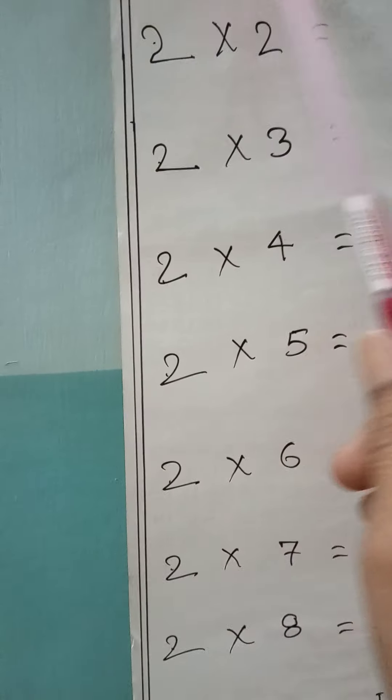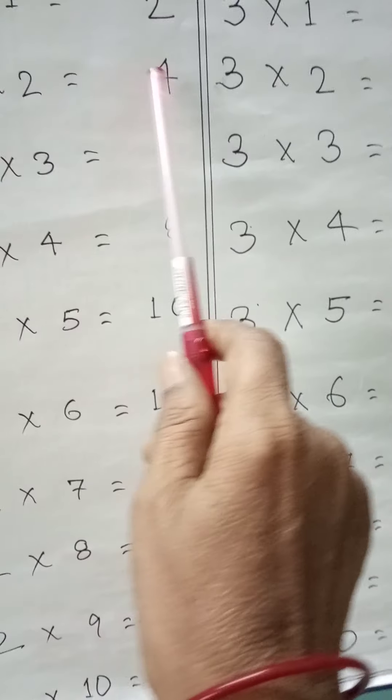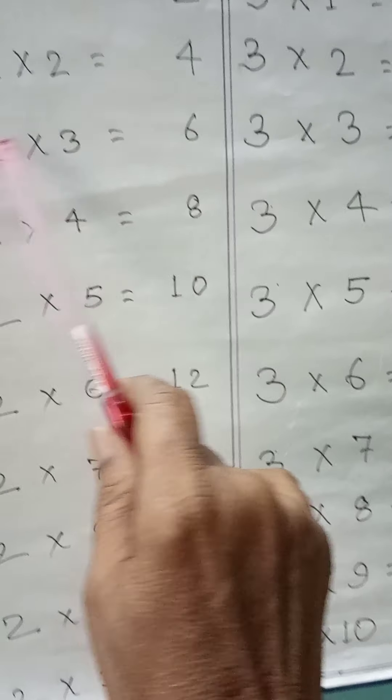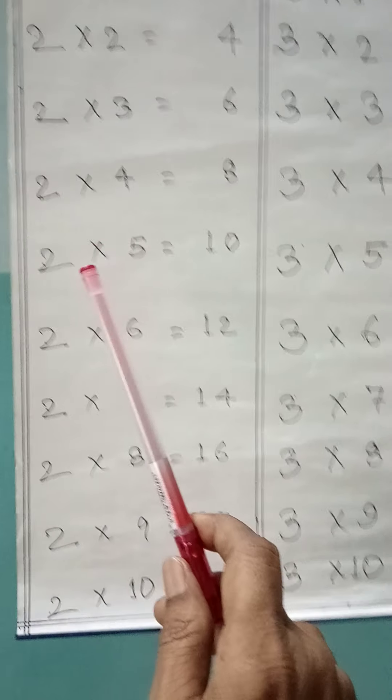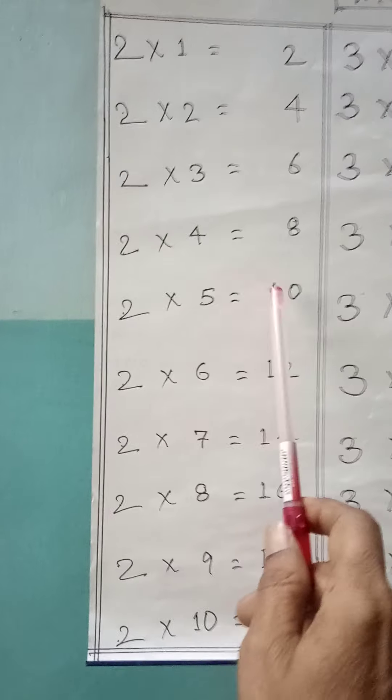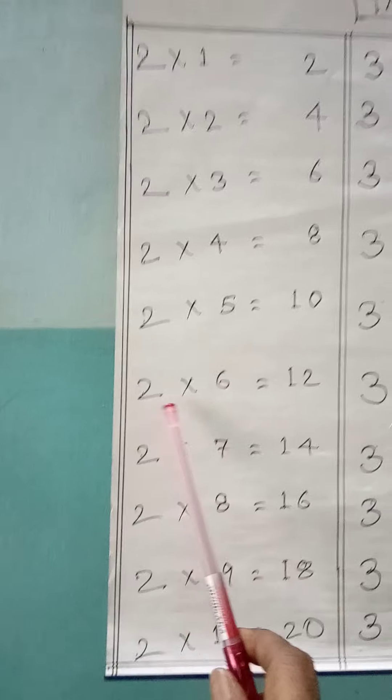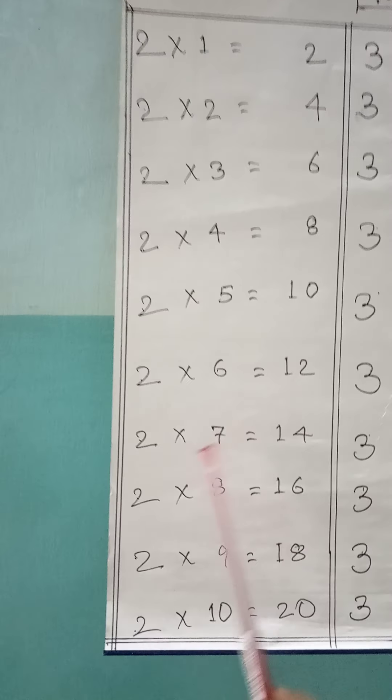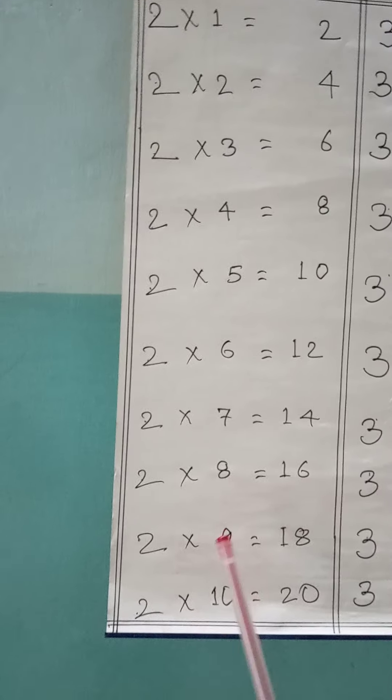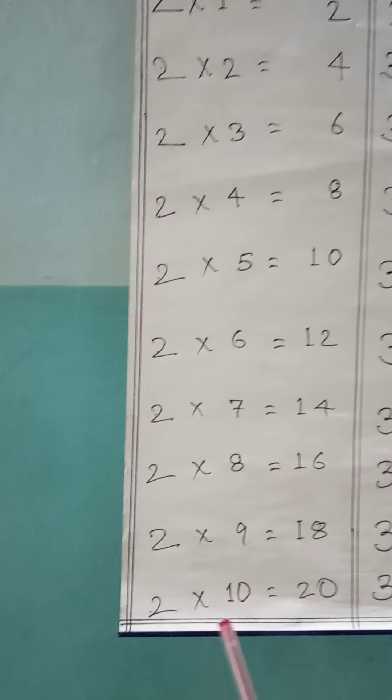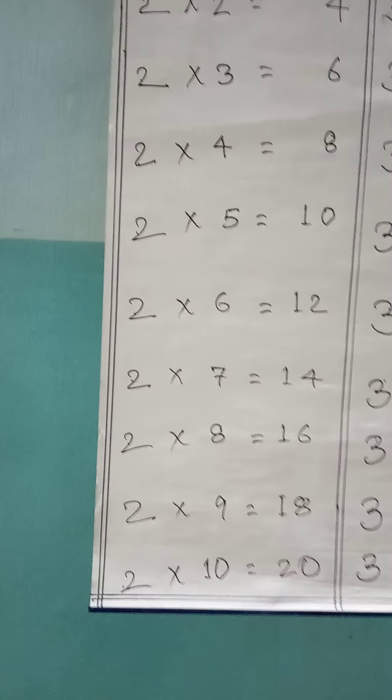2 × 2 = 4, 2 × 3 = 6, 2 × 4 = 8, 2 × 5 = 10, 2 × 6 = 12, 2 × 7 = 14, 2 × 8 = 16, 2 × 9 = 18, 2 × 10 = 20.